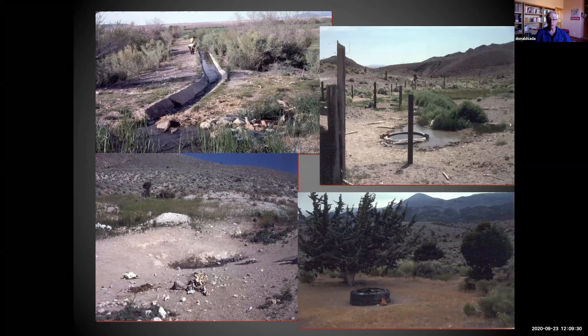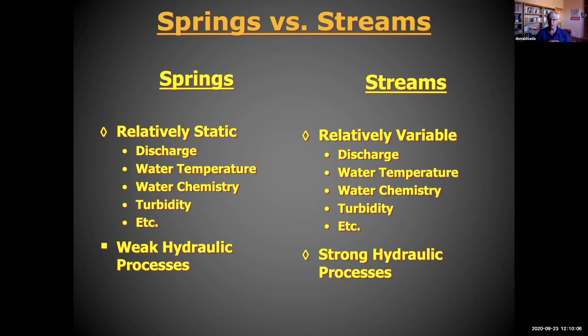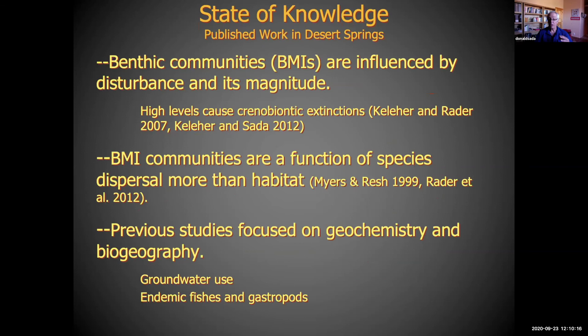Figuring out how to sort out the ecology of these springs took me a couple of decades, because there's so much of this around and there wasn't anything helpful to get some insight into how they really function. Springs versus streams — people get these things really confused. Springs are static in discharge temperature, water chemistry, turbidity, and they have weak hydraulic processes for persistent springs that flow all the time. Streams are variable in discharge, temperature, and chemistry, and they have strong hydraulic processes. These really are dramatically different environments, and we get a number of crenobiontic species — species that occur only in springs.